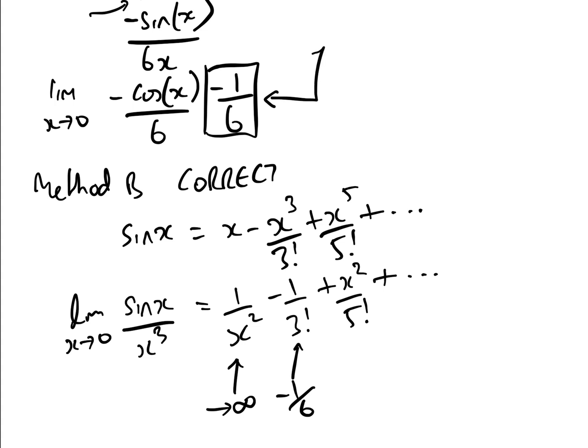And here, of course, well, we're going to get 0 over 5 factorial, etc. All of this lot is going to approach 0. And so therefore, the limit as x approaches 0, sine x over x cubed, approaches infinity as x approaches 0. And that is the correct method.